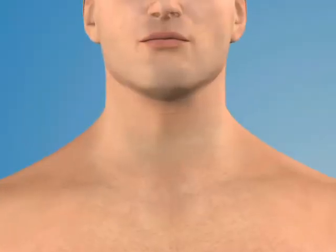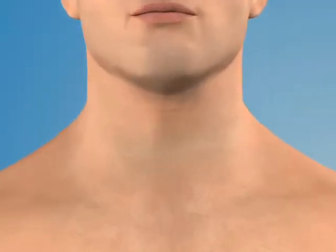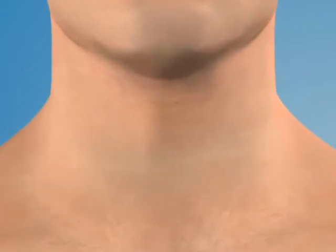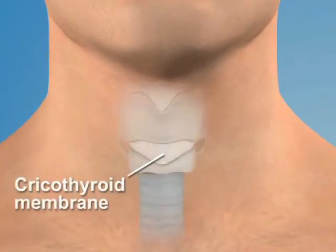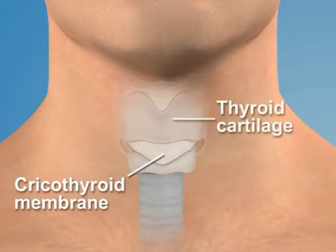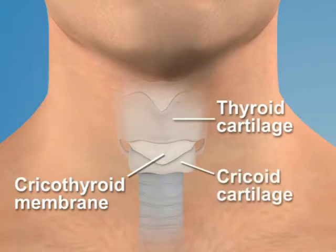The cricothyroid membrane is an elastic membrane located in the anterior midline of the neck. It is bordered superiorly by the thyroid cartilage and inferiorly by the cricoid cartilage.